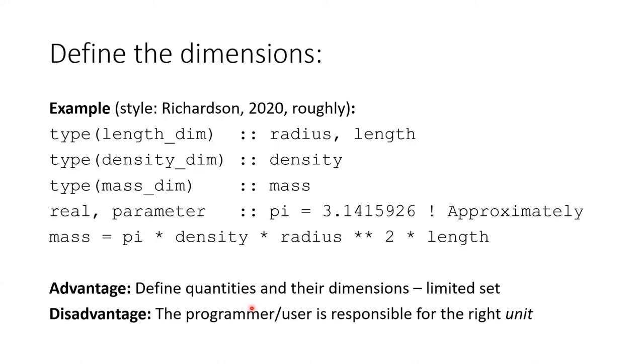The next one, defining the dimensions of your variables, and that can be done given the library by Brett Richardson. In a style like this, you define a type which has a dimension length. The library makes sure that all the allowed operations are there. So a length_dim can be combined with a density_dim. And when the proper arithmetic is used, you get a mass, things like that. So you define in advance what the dimensions are of all your variables. The advantage is that you have a fairly limited set of quantities and dimensions to worry about. It's clear where in the code things may go wrong.